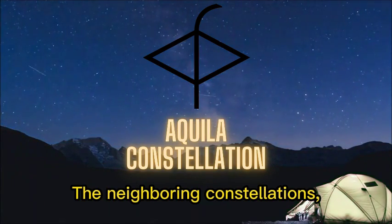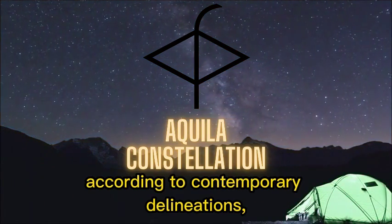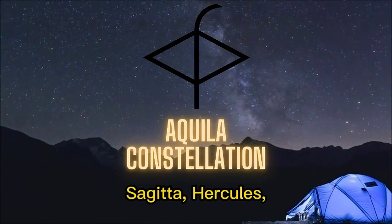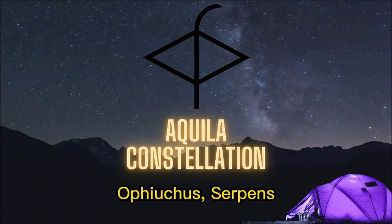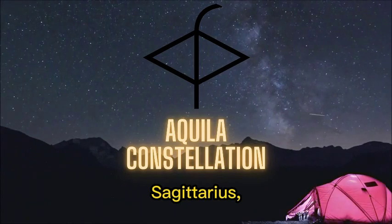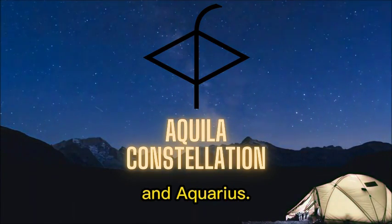The neighboring constellations, according to contemporary delineations, are Delphinus, Sagitta, Hercules, Ophiuchus, Serpens Cauta, Scutum, Sagittarius, Capricornus, and Aquarius.